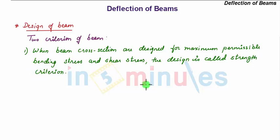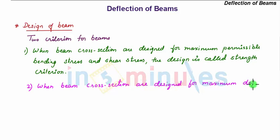Now we have studied design of beams based on bending stress and shear stress in their respective chapters. Now this chapter deflection of beams gives another criterion for the design of beam, which is when beam cross-sections are designed for maximum deflection, the design criterion is called stiffness criteria.